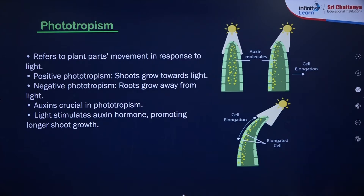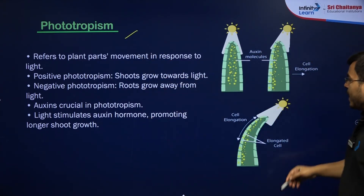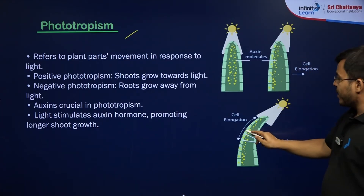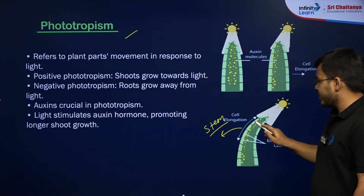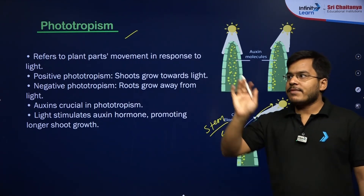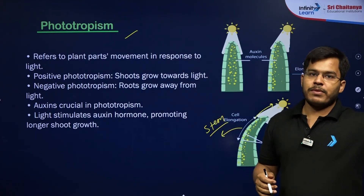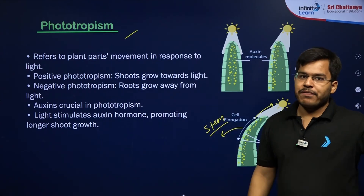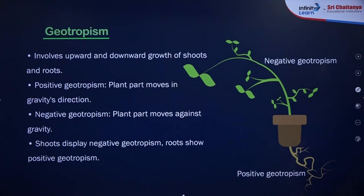First, phototropism: the stem part of the plant moves towards the light. Wherever the light is, the plant stem moves towards it, while roots move away from the light. So stems are positively phototropic and roots are negatively phototropic.